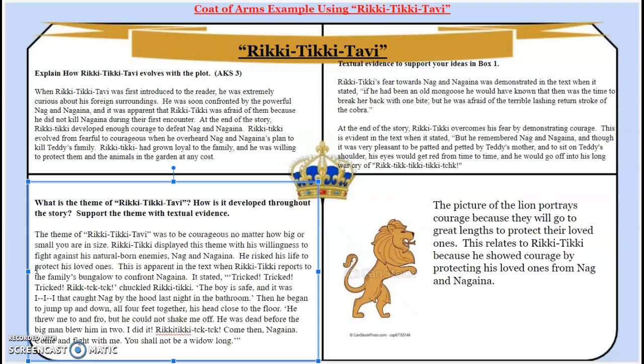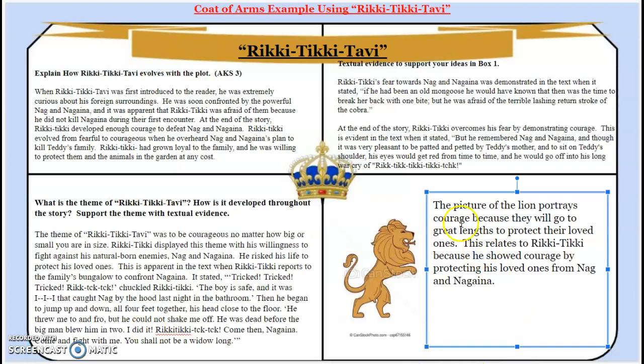And then our last box, box four: that's where we need to find a picture and then explain how the picture symbolizes the theme. The picture must portray the theme and you must explain it. So here we have a lion, and usually lions portray courage. This says: the picture of the lion portrays courage because they will go to great lengths to protect their loved ones. This relates to Rikki-Tikki because he showed courage by protecting his loved ones from Nag and Nagaina.